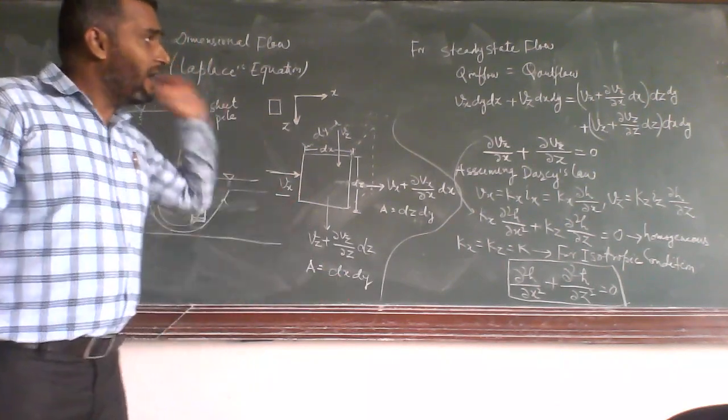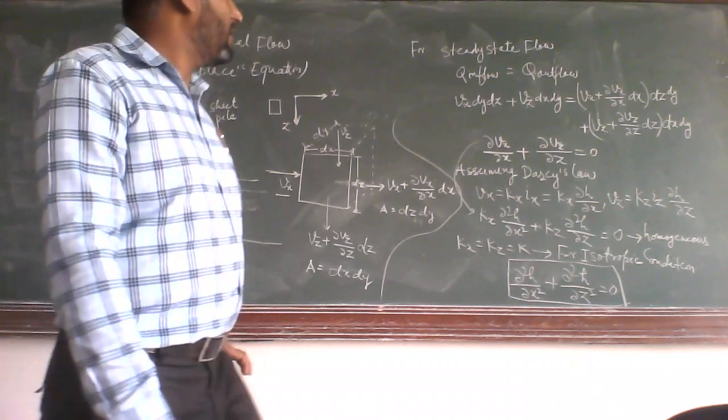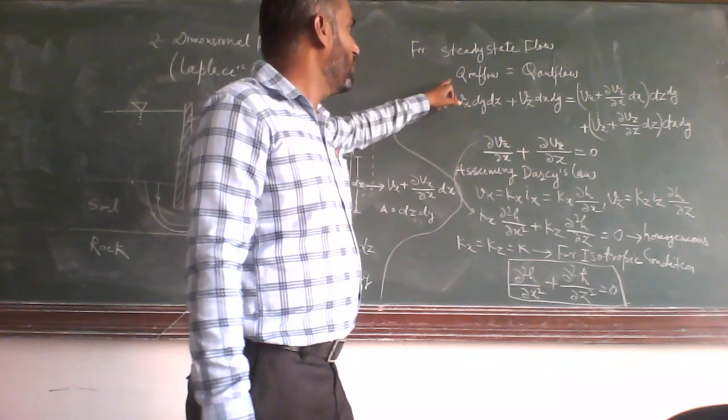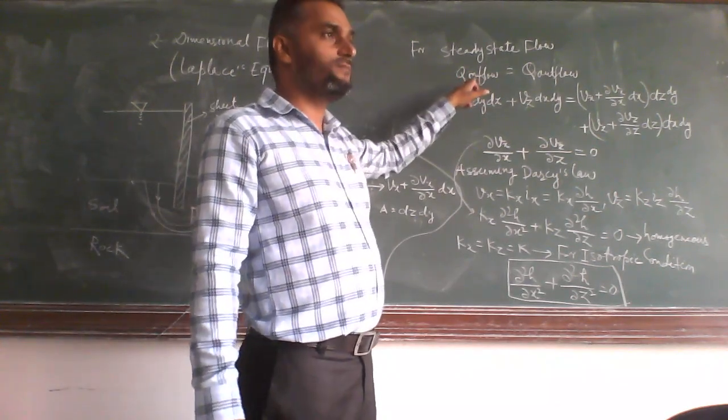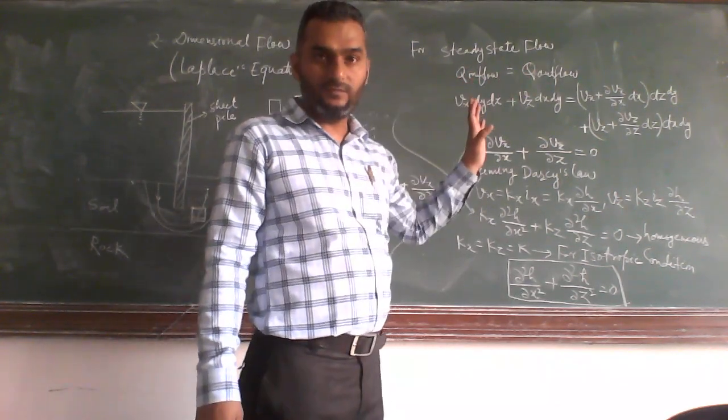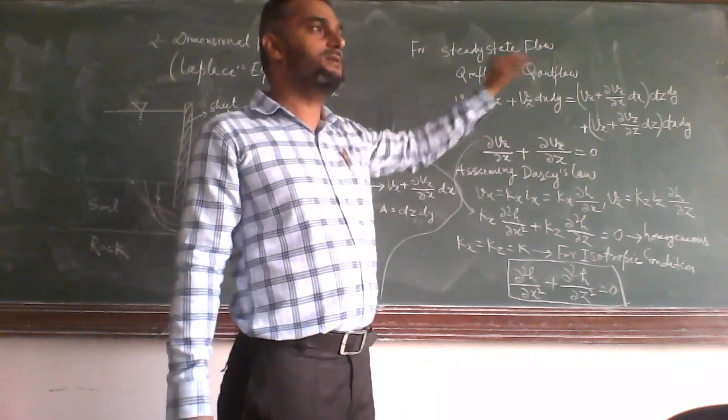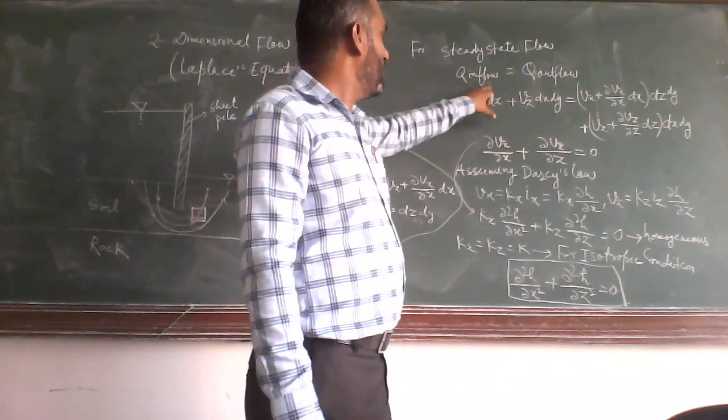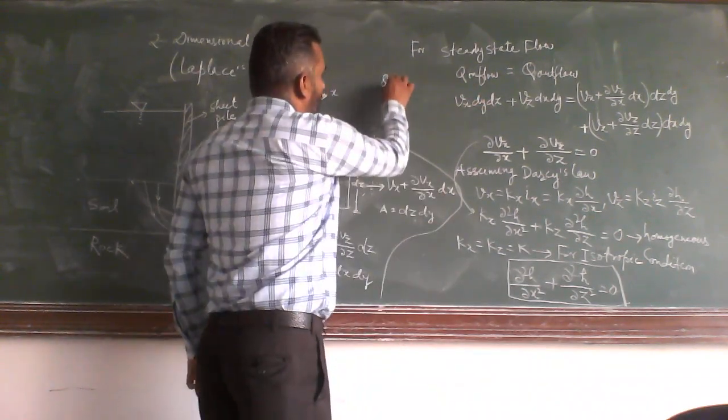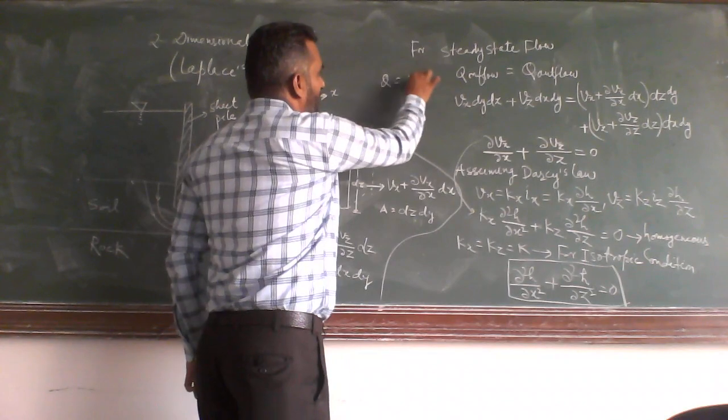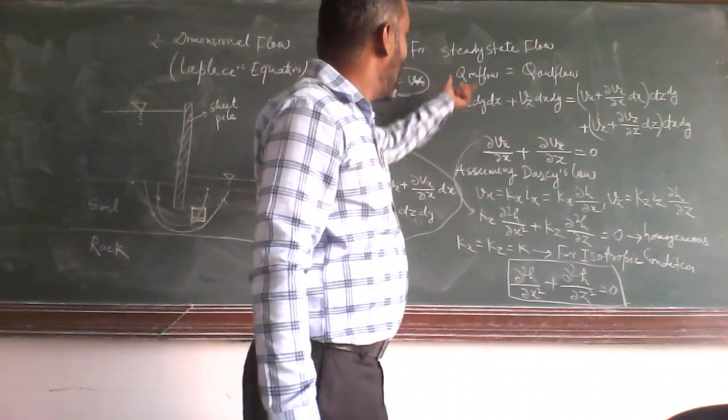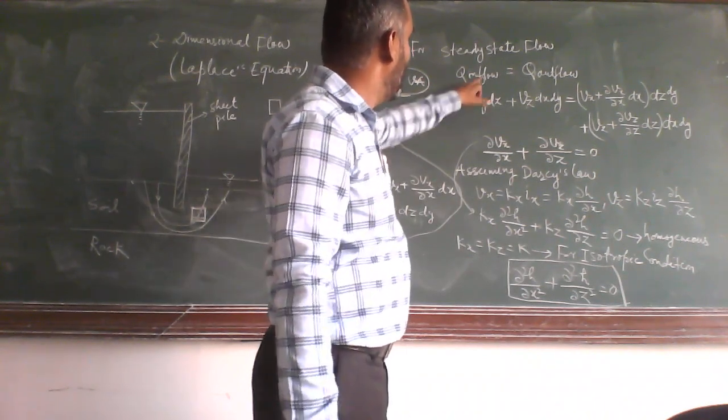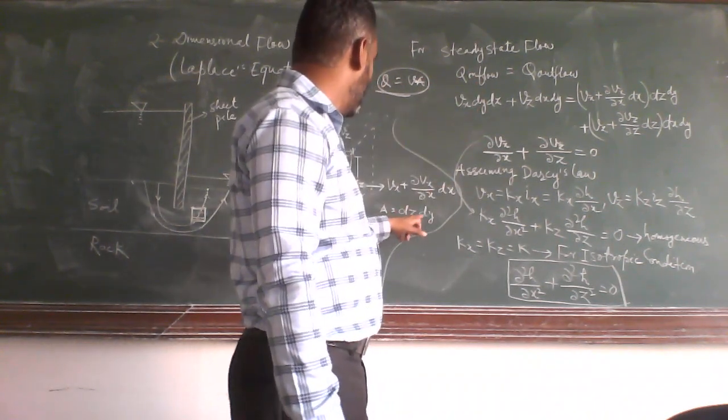So, if you consider the steady state of flow, we all know the inflow is equal to outflow. Discharge at inflow is equal to the discharge at outflow. So, q equals v into a, velocity into area. In case of x direction, vx into area dy dz, and in case of z direction, vz into dx dy.